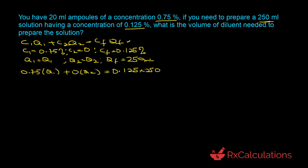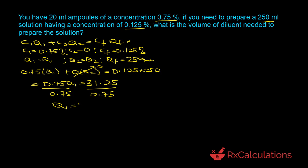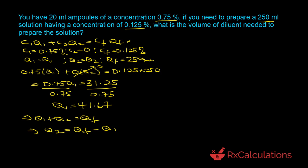Since 0 times any quantity is 0, that term drops out, leaving 0.75·Q1 = 0.125 × 250 = 31.25. Dividing both sides by 0.75 gives Q1 = 41.67 milliliters. But Q1 is the quantity of solution from the ampoules. What we need is Q2, the volume of the diluent. Using Q1 + Q2 = Qf, we get Q2 = 250 − 41.67 = 208.33 milliliters.